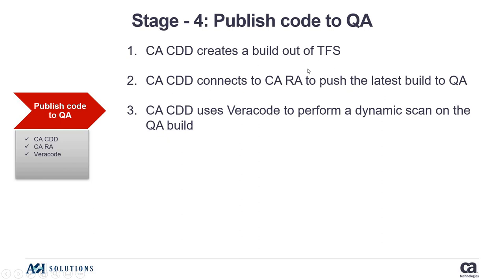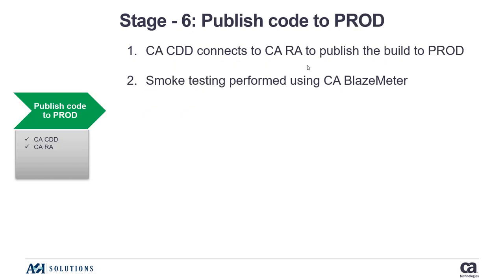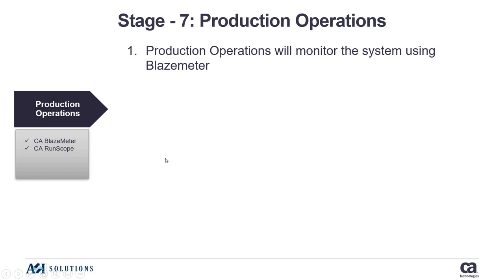In our demo, CDD creates a build and moves it to QA. Once the developer has checked it back in, CDD creates a build out of TFS, then connects to RA and pushes the latest build to QA. From there, CDD can use Veracode — which we won't do in this demo — for a dynamic scan on the build to check for security. QA can run their tests; we're going to use BlazeMeter to do a load test and a functional test. Then you can use CA APM for application performance monitoring to monitor the QA environment. Once everything passes, it goes to production — we're doing a best-case scenario.